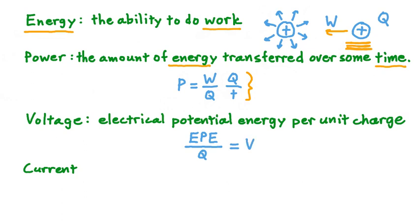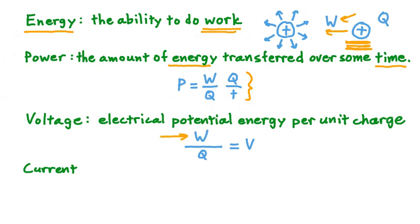Take a look at this: in the numerator we have an energy, and as we saw earlier, energy is the ability to do work. In fact, the electric potential energy of this charge is equal to the work it would take to bring the charge to this particular location from infinitely far away. We can say this is the same amount of work W as referred to in our equation for power — the work done to bring the charge in from infinitely far away. Making this substitution, replacing EPE with the work done on the charge, voltage, or equivalently electrical potential, is equal to the work done on a charge divided by the amount of charge it possesses.